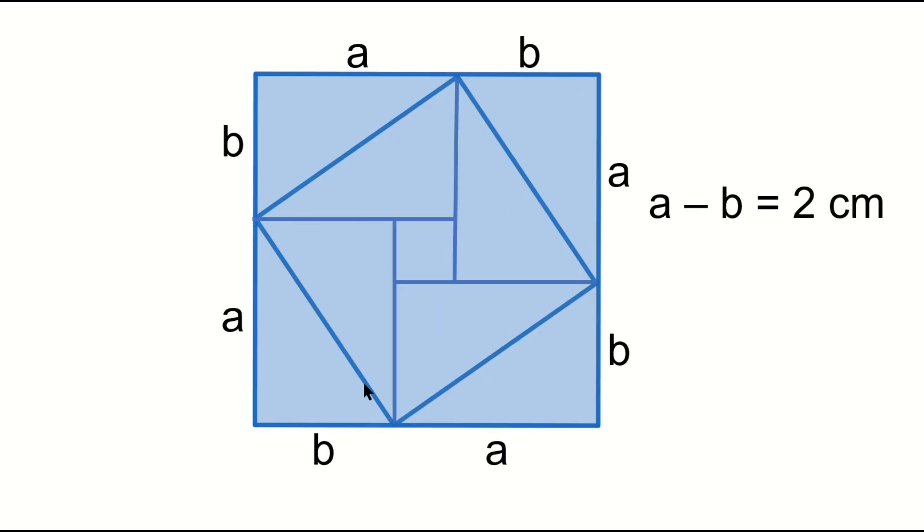The area of these triangles are the same, because these triangles are made by dividing a rectangle in half diagonally. And, the length of one side of this small square is A minus B, two centimeters.